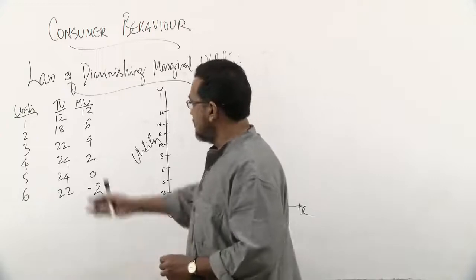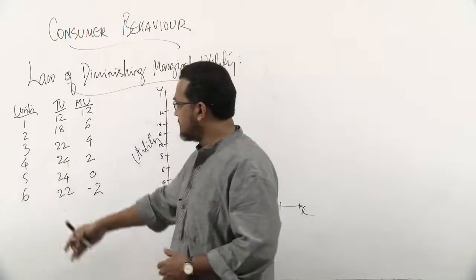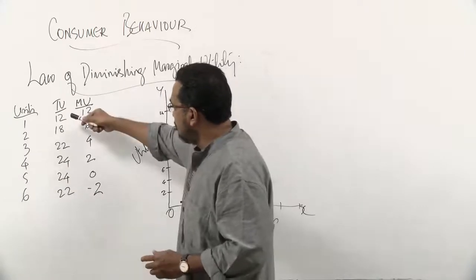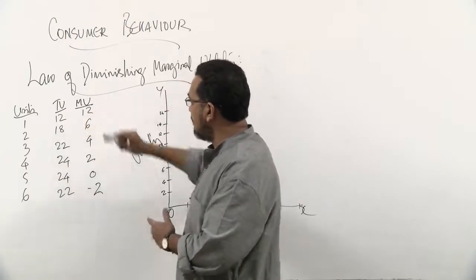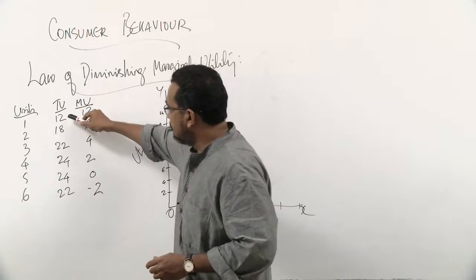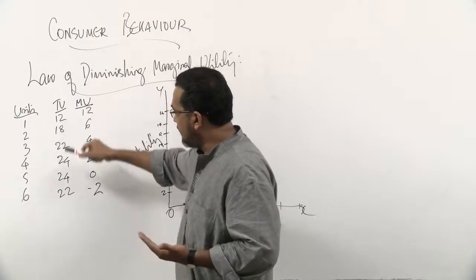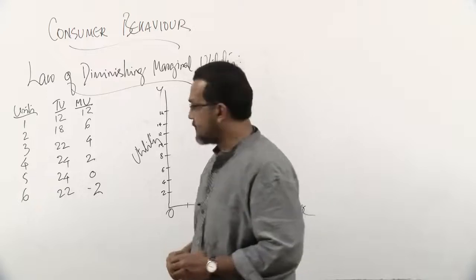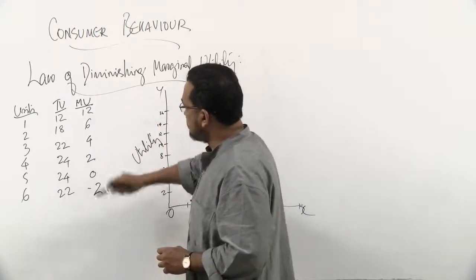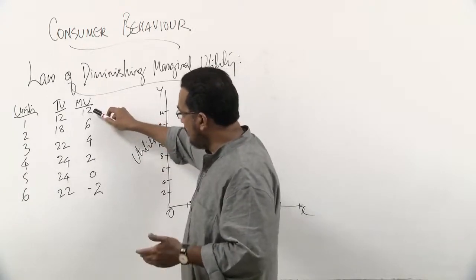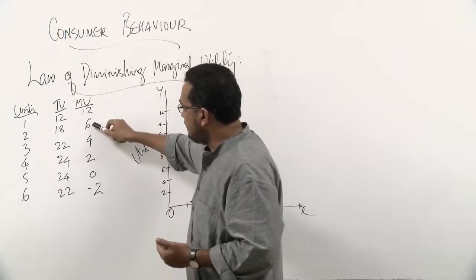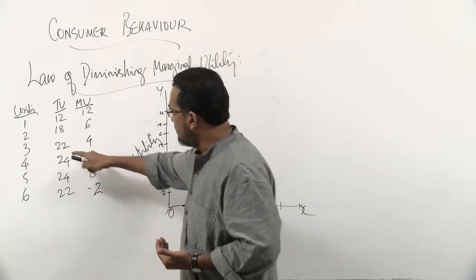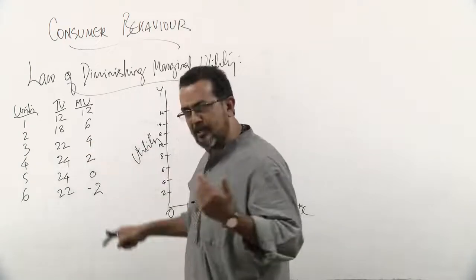We have taken chocolate as an example — the consumption of six units of chocolates giving various total and marginal utility values. Total utility with one unit is 12 utils and ultimately with six units it ends up with 22 utils of satisfaction. Marginal utility with the first unit is 12 utils, later declines to 6, then with the third unit it becomes 4.